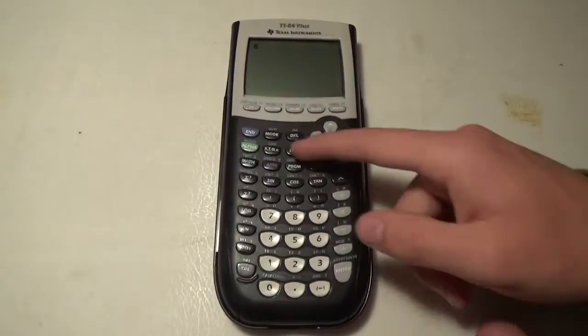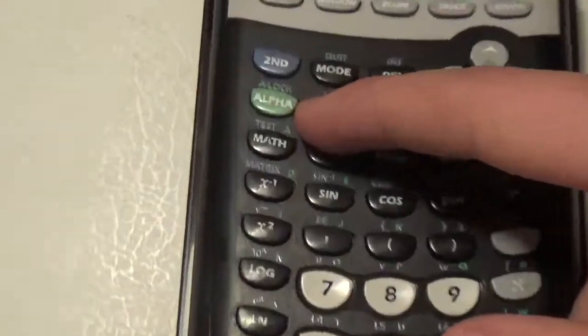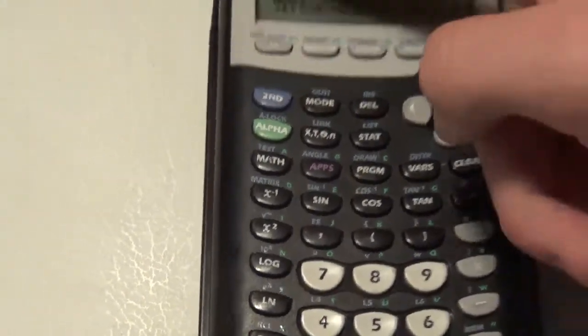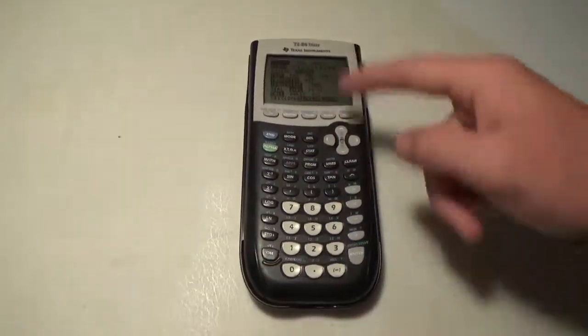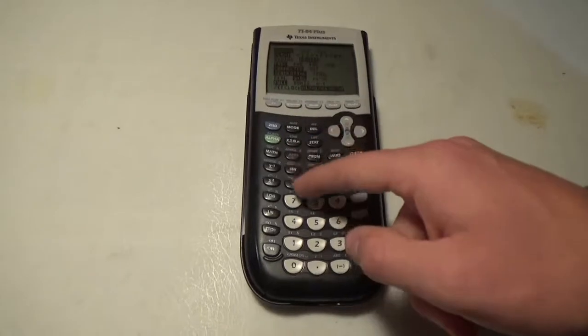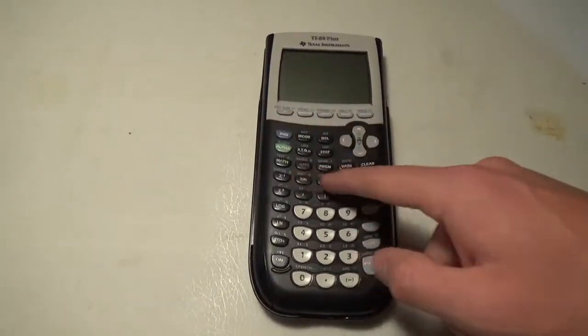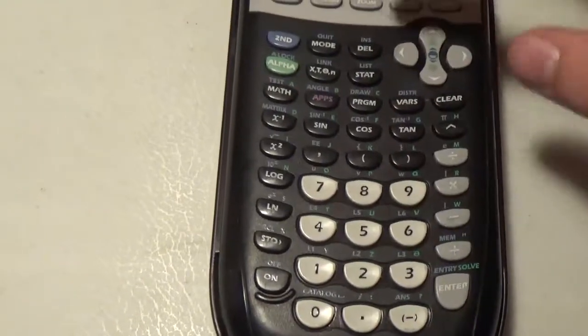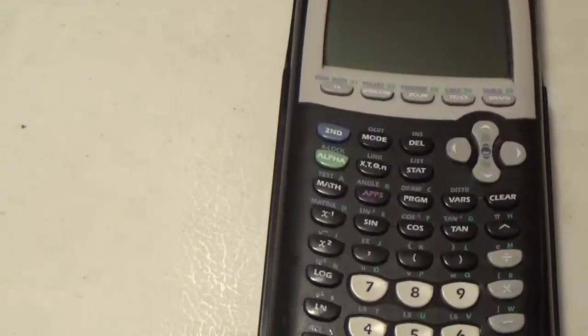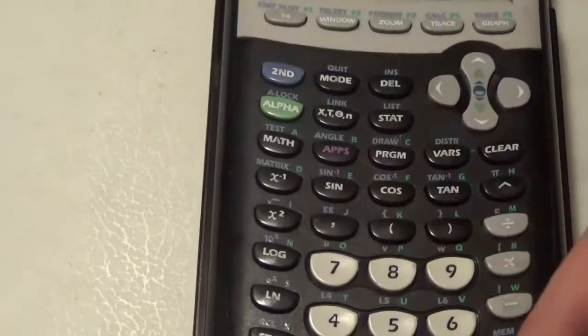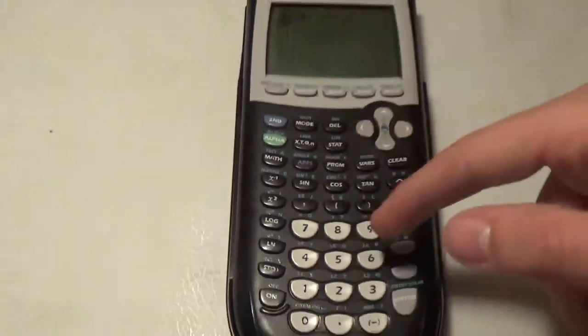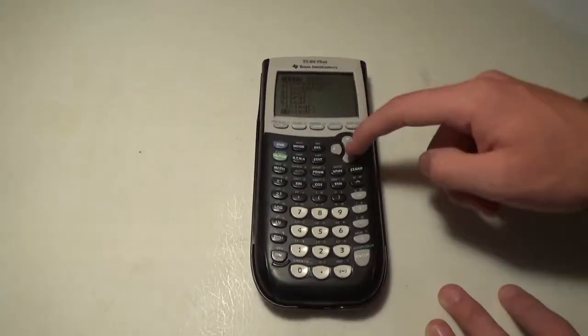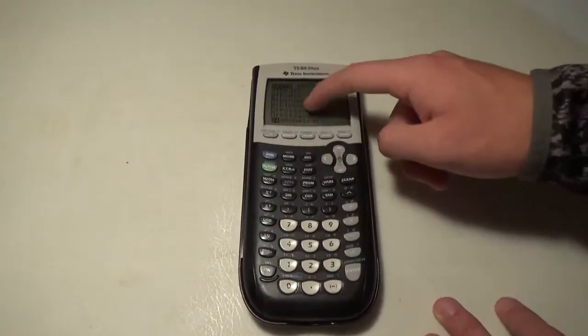These are the symbol buttons for XT, theta and n depending on which mode you're in - function, parametric, polar or sequential. Your trigonometric functions are down here, comma, parentheses. Each button has a function when you hit second or alpha. Like if I hit second variables, it takes me to the distribution menu where I can access binomial distribution, normal distribution.